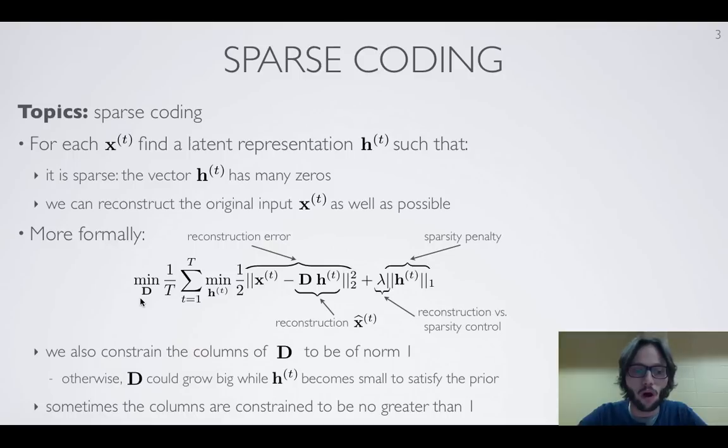The outer loop of this sum, what we do is for all the training sets, we want to find the dictionary matrix D, which is such that it's going to lead to a very small reconstruction and sparsity combined with the sparsity penalty, a very small loss for all the training examples. So that's how we're going to formulate our learning problem as this optimization problem here.